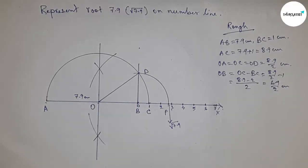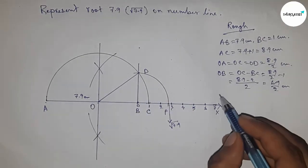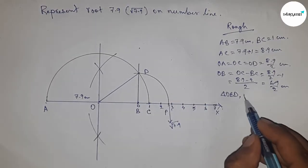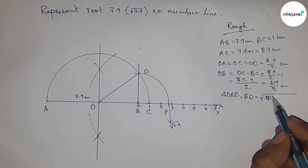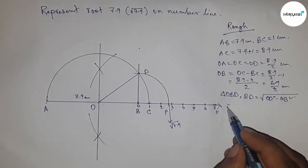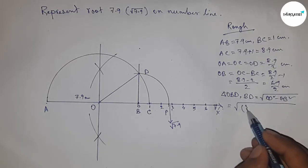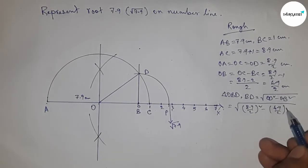From right angle triangle OBD, we can write BD equals root of, by Pythagoras theorem, OD squared minus OB squared, hypotenuse squared minus base squared. So putting the value of OD and OB.